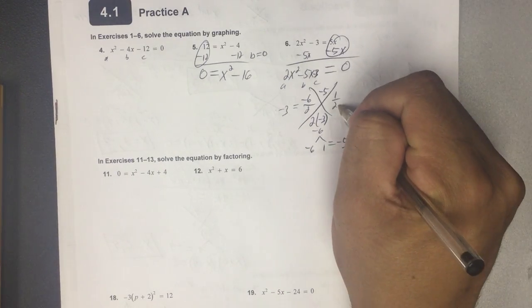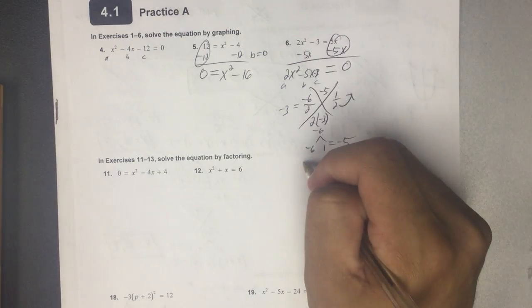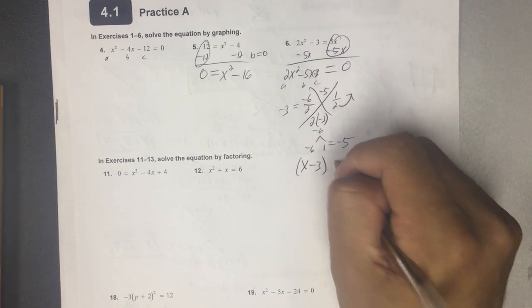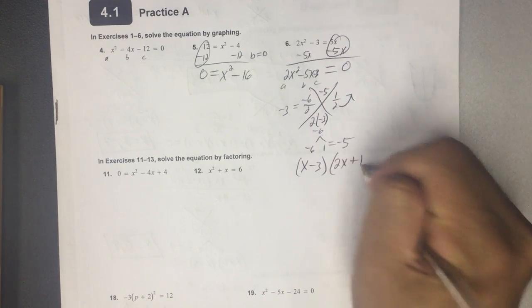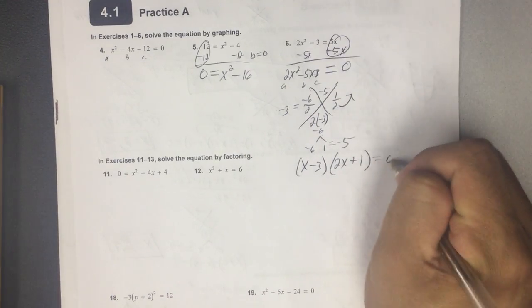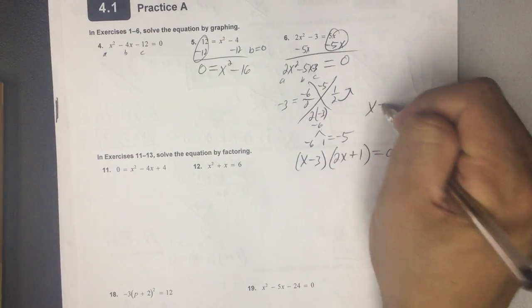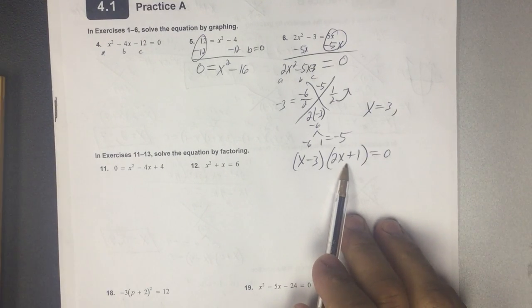What do we do with the fractions? We said bottoms up. So this is x minus 3. And over here, the bottom came up, so it's 2x, goes right there in front of the x, plus 1. When does this equal 0? Cancels when x equals 3 or when this equals 0.